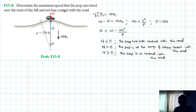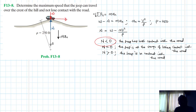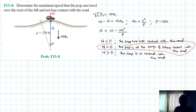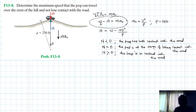So how do we find the maximum speed that the jeep can travel over the crest of the hill and not lose contact with the road? We use the condition N equal to zero, because that is the limit — the jeep is still in contact but at the verge of losing contact.